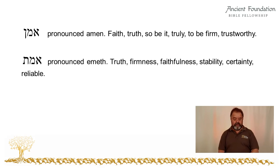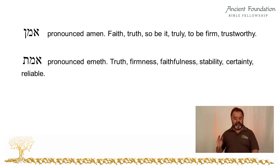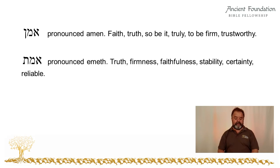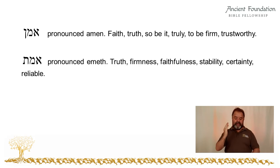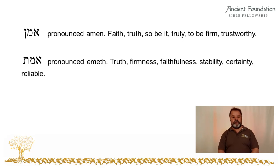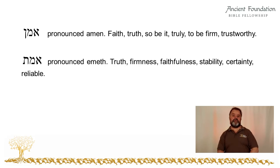Another Hebrew word is Emeth, also meaning truth, firmness, faithfulness, stability, certainty, and reliable. I want to share something on this word. It's made up of an Aleph, a Mem, and a Tau — read from right to left. This word Emeth is made up of the first letter in the Hebrew alphabet, the middle letter which is the Mem, and the last letter which is the Tau. So this is showing us that truth spans from Aleph all the way through to Tau and everything in between — in English we would say from A to Z. This shows that Yahweh's word is truth, the only truth, as it is made up of all the letters of the Hebrew alphabet.